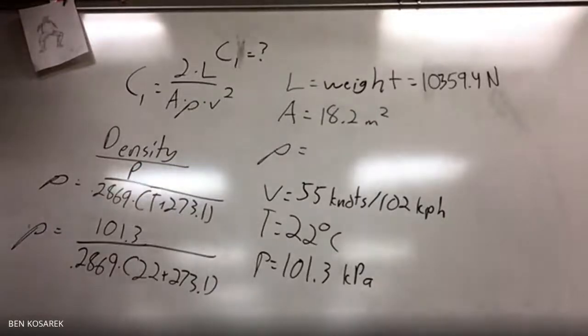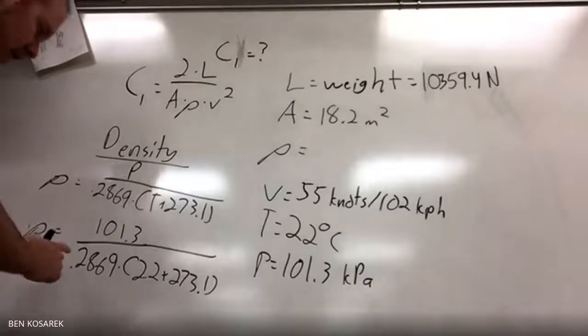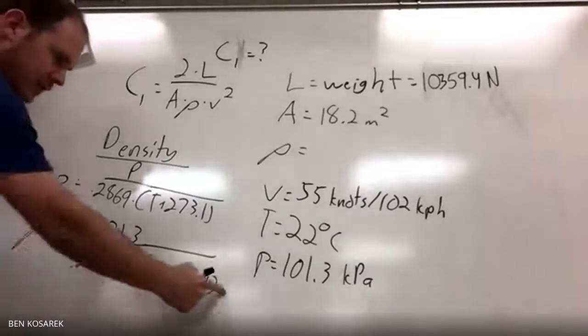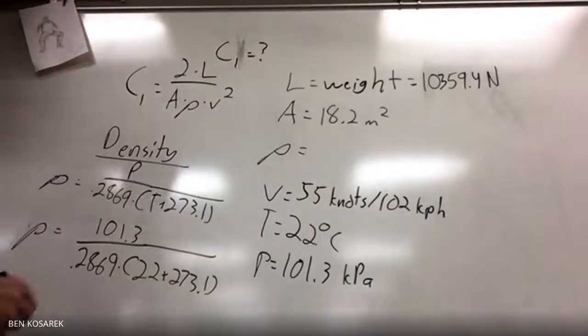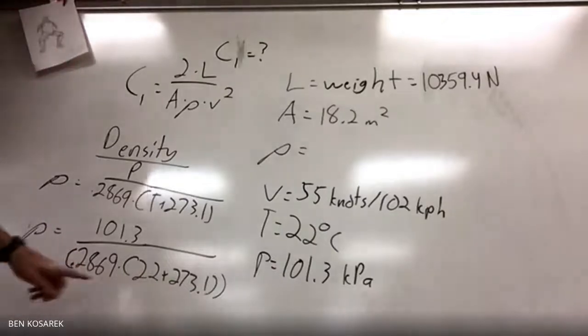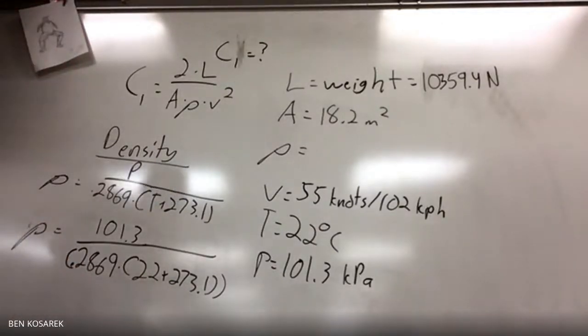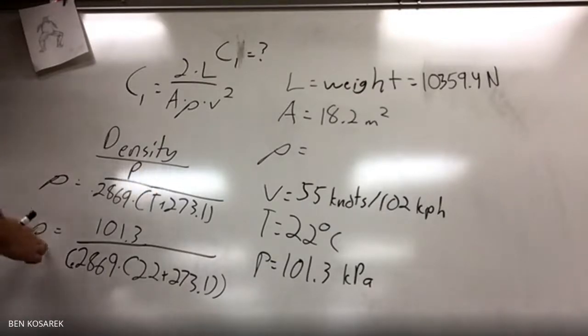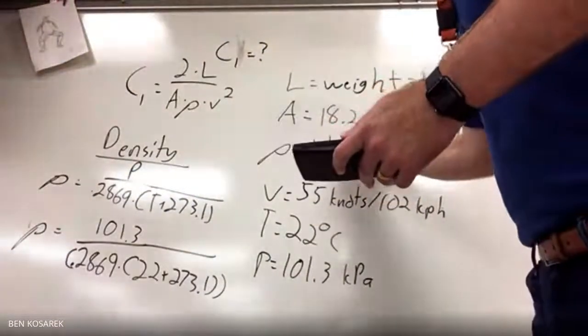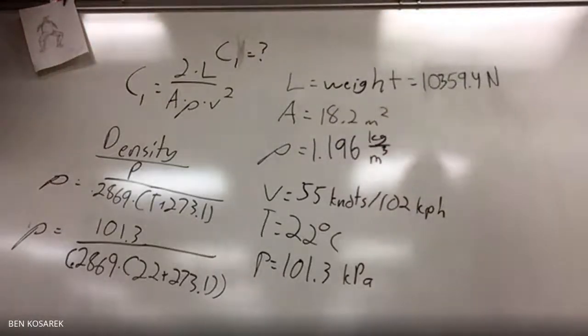Don't forget the unwritten rule of math: you have to do the denominator before any dividing. So we do 101.3 divided by 0.2869 times (22 plus 273.1), and we get a density of 1.196 kilograms per meter cubed.